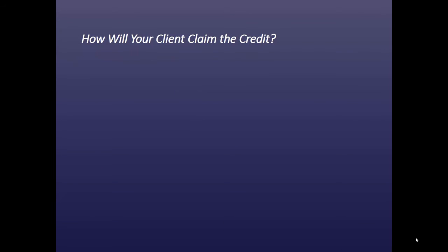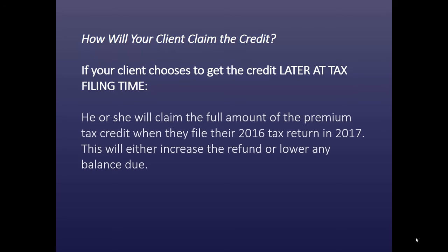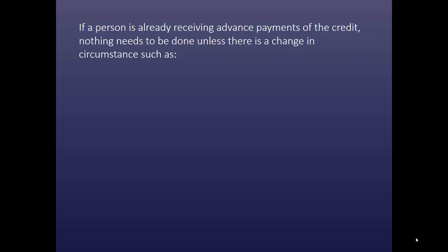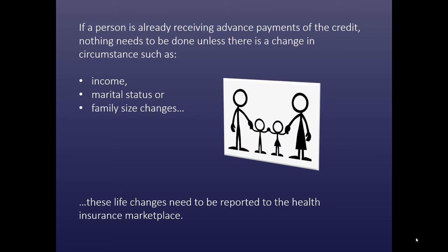How will your client claim the credit? If your client chooses to get the credit later at tax filing time, he or she will claim the full amount of the premium tax credit when they file their 2016 tax return in 2017. This will either increase the refund or lower any balance due. If a person is already receiving advance payments of the credit, then nothing needs to be done unless there's a change in circumstance such as income, marital status, or family size changes. These life changes need to be reported to the health insurance marketplace as soon as possible.